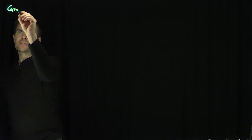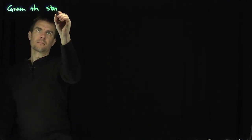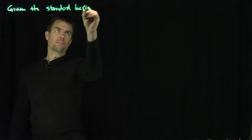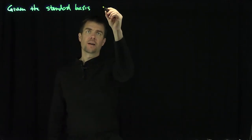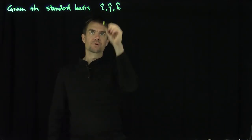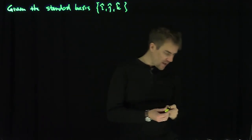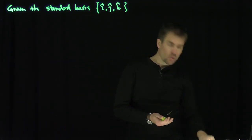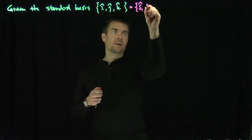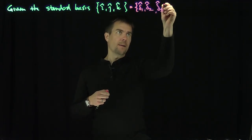Let's recall that if we're given the standard basis i, j, and k, we introduce some tensor notation to make our life a little bit easier. We call i, j, and k delta 1, delta 2, delta 3, so there's no confusion. So delta 1 for i, delta 2 for j, delta 3 for k.